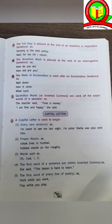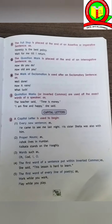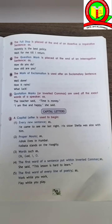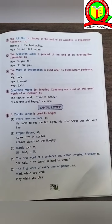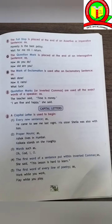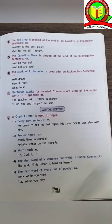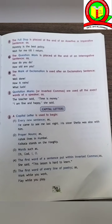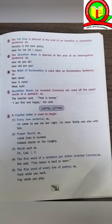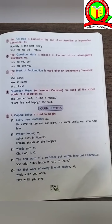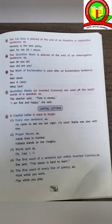We are also well acquainted with the question mark — it is placed at the end of an interrogative sentence, such as: 'How do you do?' The mark of exclamation is used after an exclamatory sentence, such as: 'Well done!', 'How it rains!', 'What luck!'